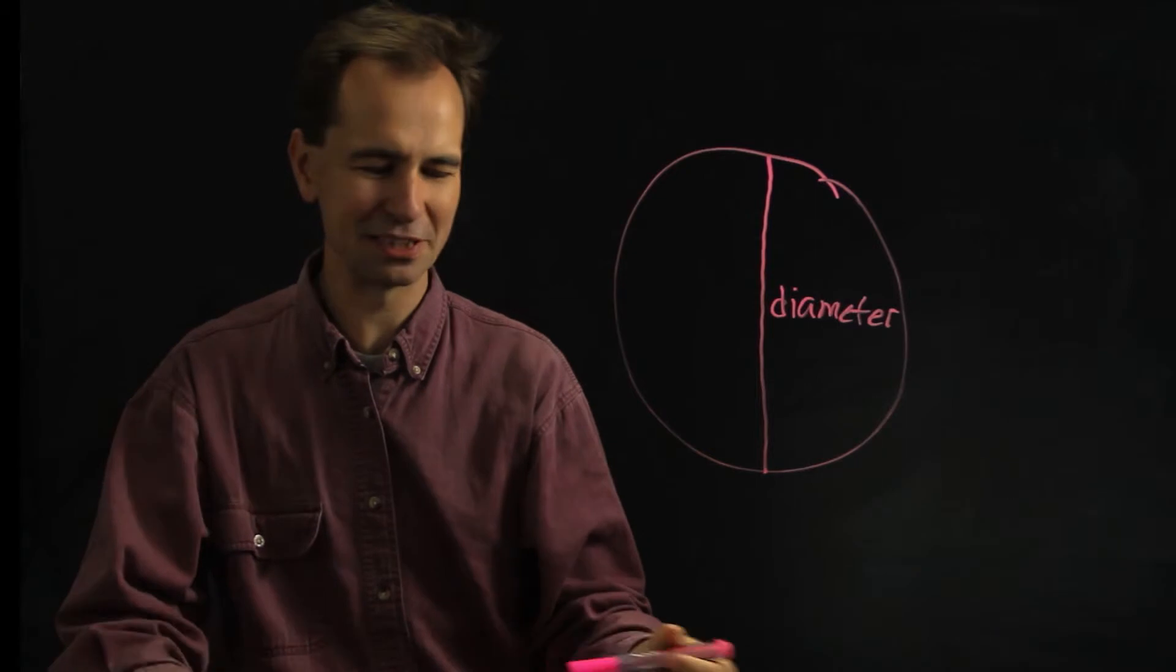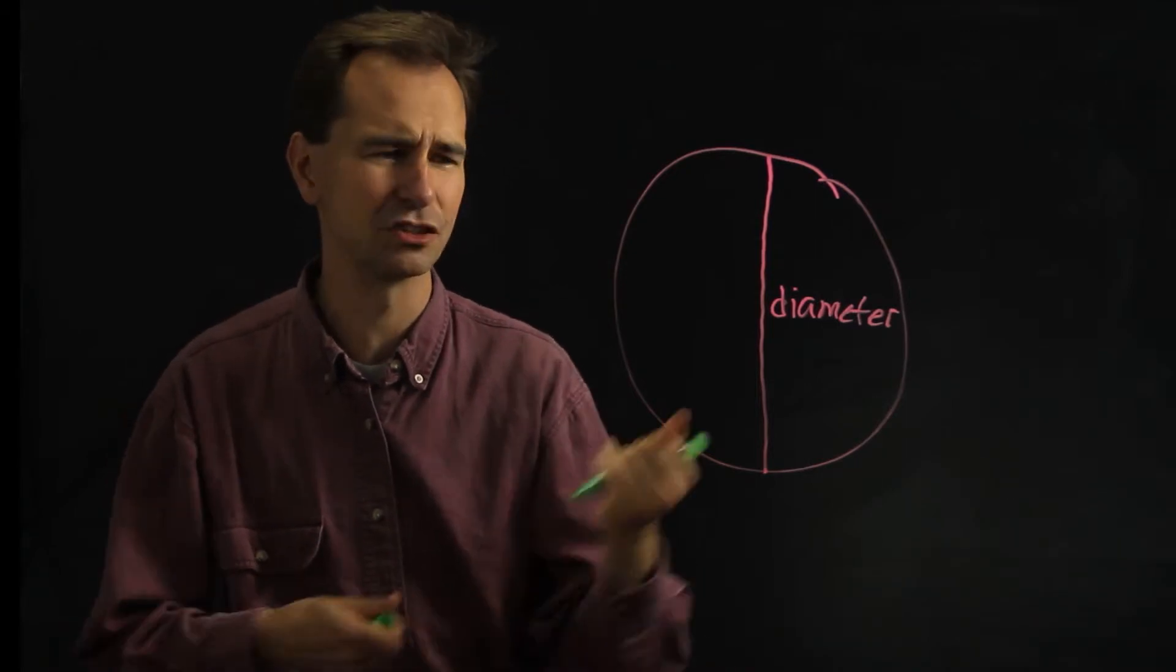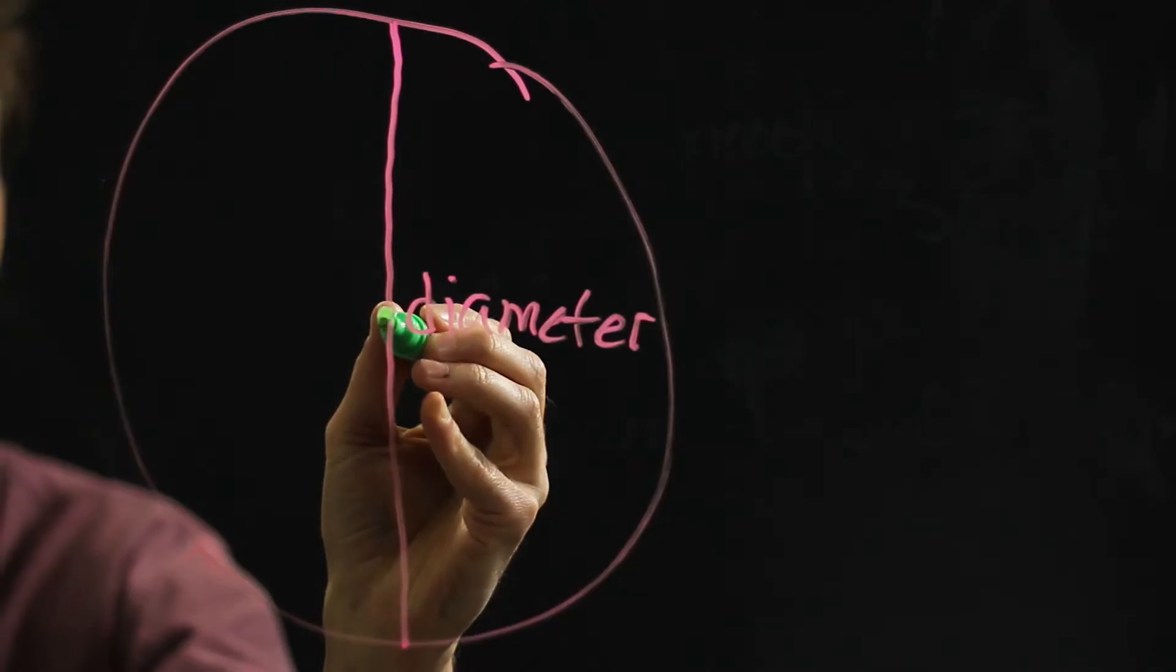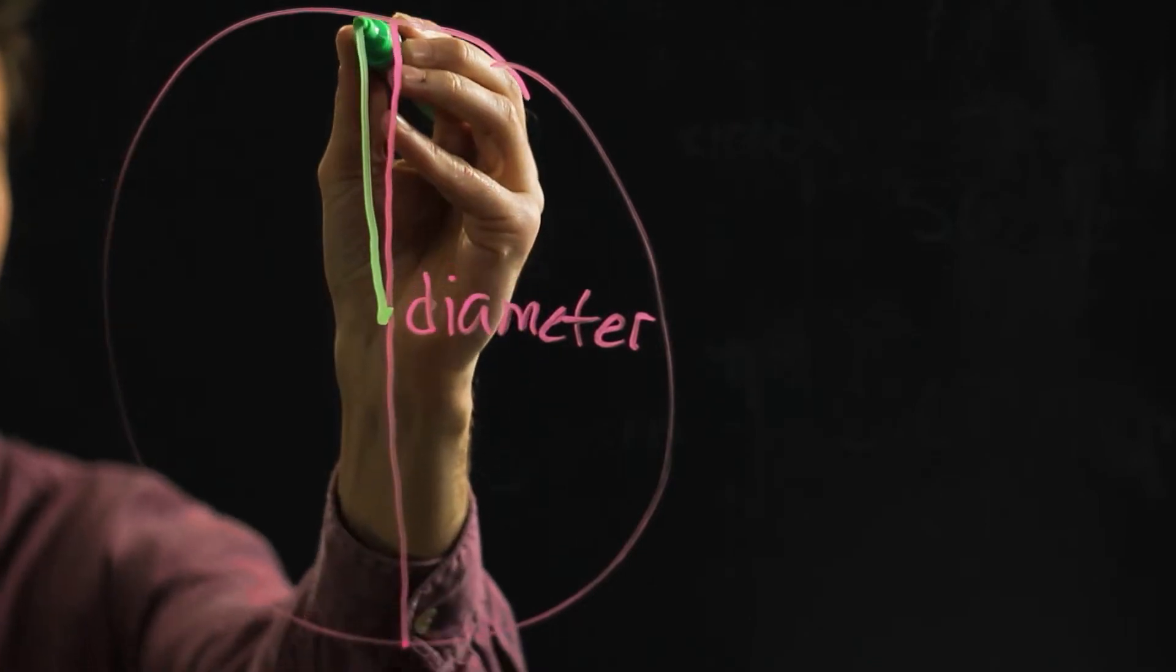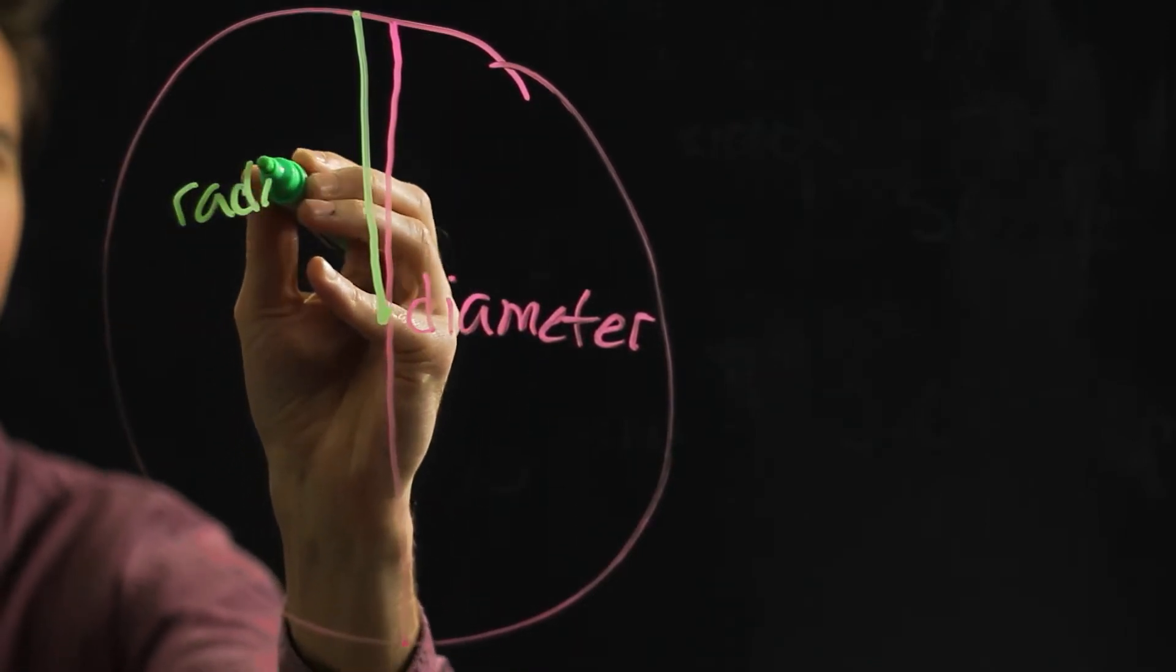Another measurement that we sometimes talk about is the radius of a circle. That's when you go from the center out to the edge. So there's the radius of the circle.